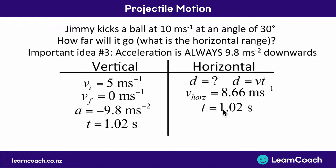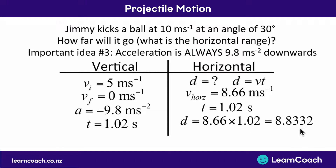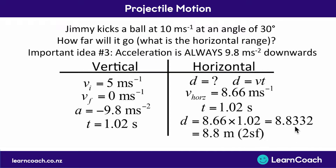Now that we know the time we can use distance equals velocity times time. Our horizontal velocity is 8.66 meters per second and the time is 1.02 seconds, giving a final horizontal distance of 8.8332 meters — or 8.8 meters to two significant figures. And there's our answer.